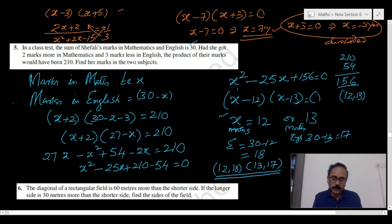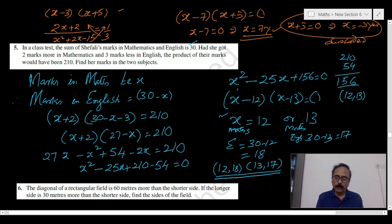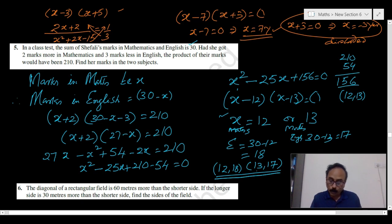Verifying: if Maths marks are 12, then 2 more gives 14, and English 18 minus 3 gives 15. Product: 14 times 15 equals 210. Verified. Similarly, if Maths is 13, then 2 more gives 15, and English 17 minus 3 gives 14. Again, 15 times 14 equals 210. Verified.